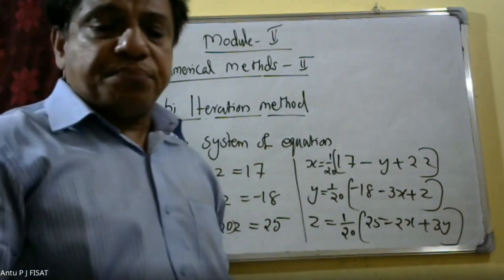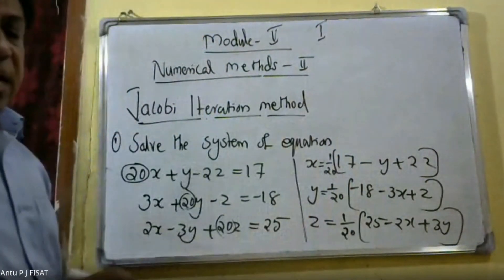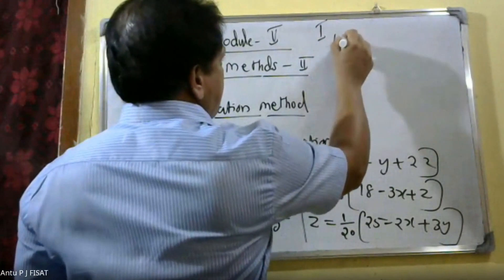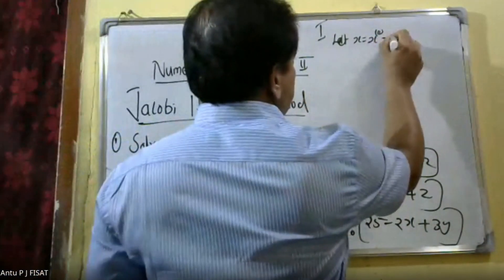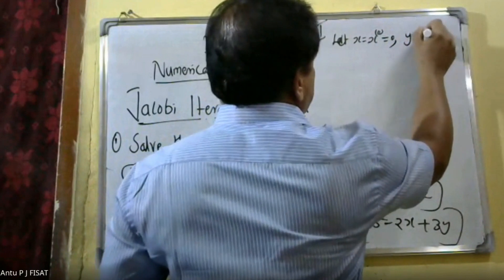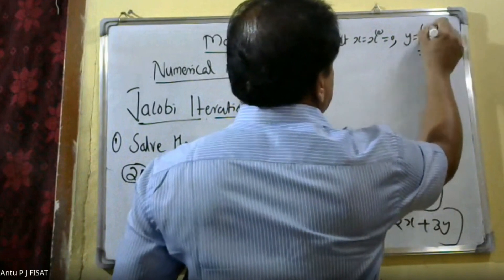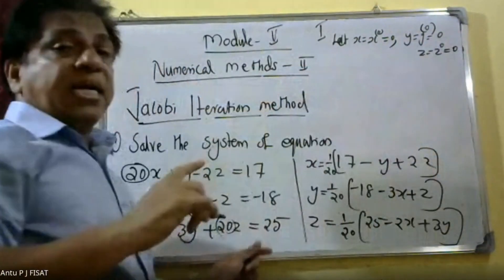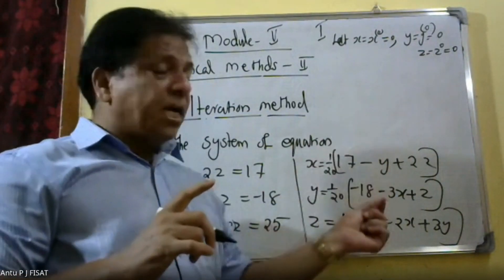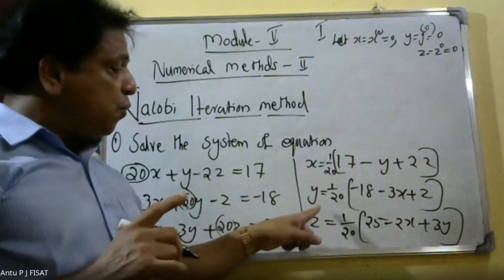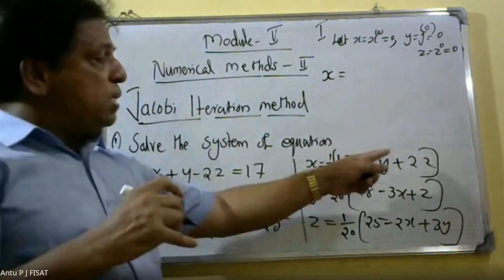Now let us begin the first iteration. For iteration number 1, we assume the initial values: x raised to 0 is equal to 0, y raised to 0 is equal to 0, and z raised to 0 is equal to 0. We substitute these initial assumed values of 0 into the equations.